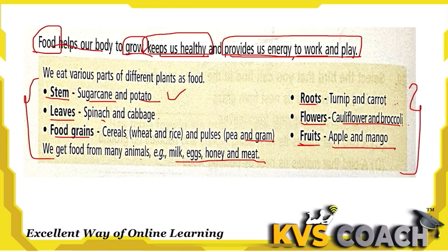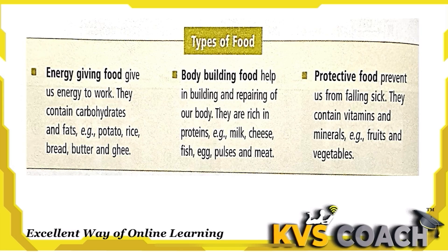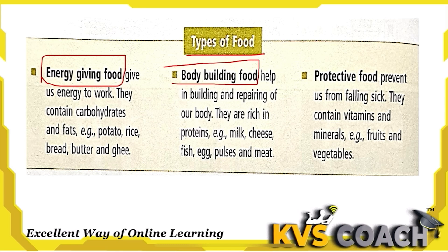There are mainly three types of food. First is energy-giving food, second is body-building food, and third is protective food. So food plays three main roles in our body: giving energy, building the body, and protection. For all three functions, we eat different types of food.